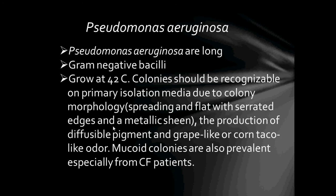The next bacteria is Pseudomonas aeruginosa. Pseudomonas aeruginosa are long gram-negative bacilli and grow at 42 degrees Celsius. Colonies should be recognisable on primary isolation media due to colony morphology — spreading and flat with serrated edges and a metallic sheen.